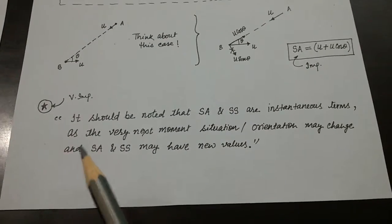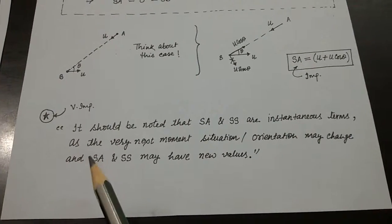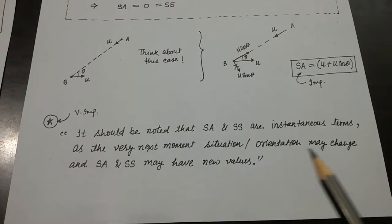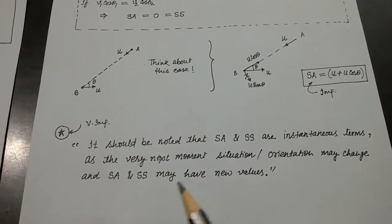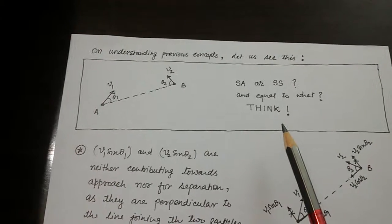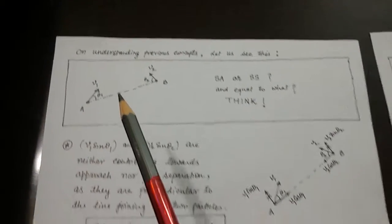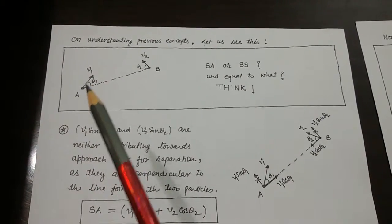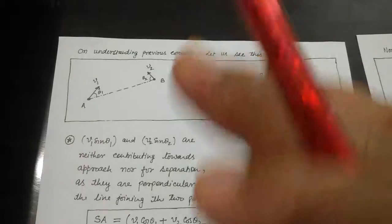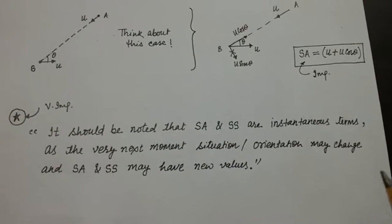It should be noted that speed of approach and speed of separation are instantaneous terms, as the very next moment the situation or orientation may change and speed of approach and speed of separation may have new values. To understand this point, go back to the previous example — it was a case of speed of approach, but after a long time the particles would have passed and be separating from each other. So speed of approach and speed of separation are instantaneous terms.